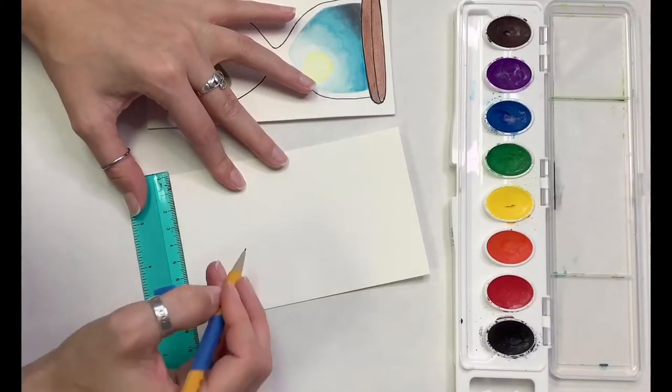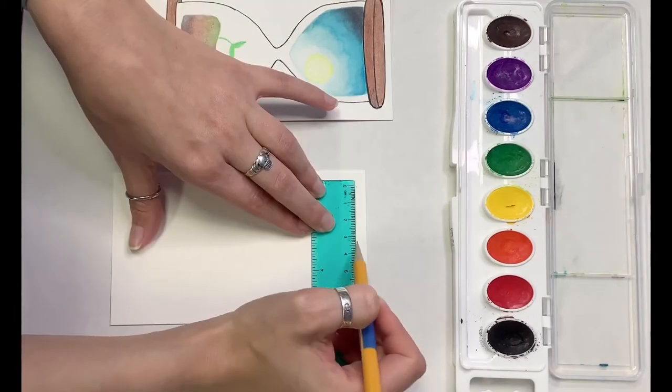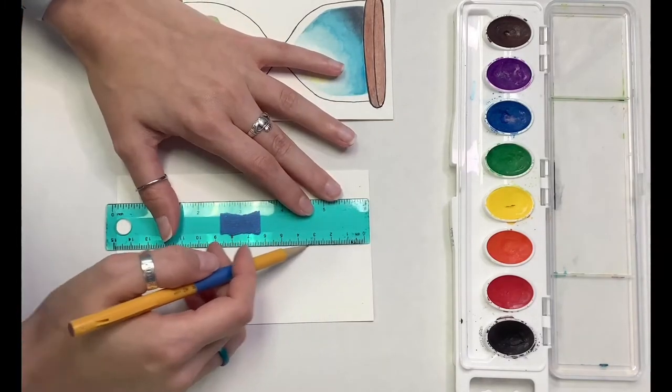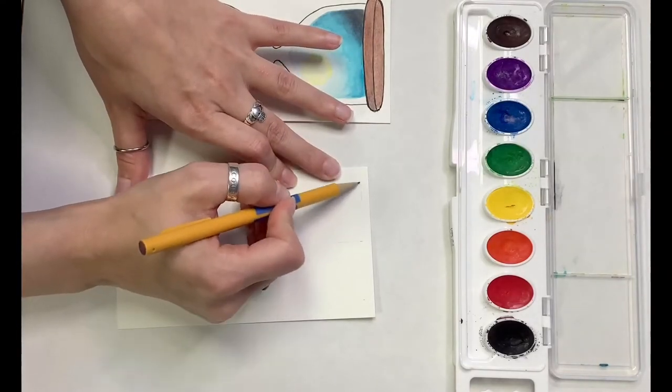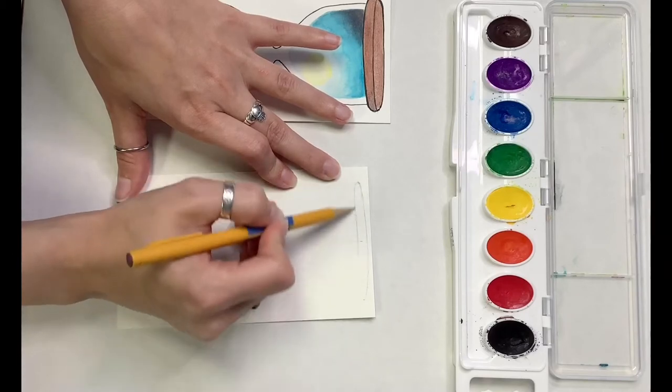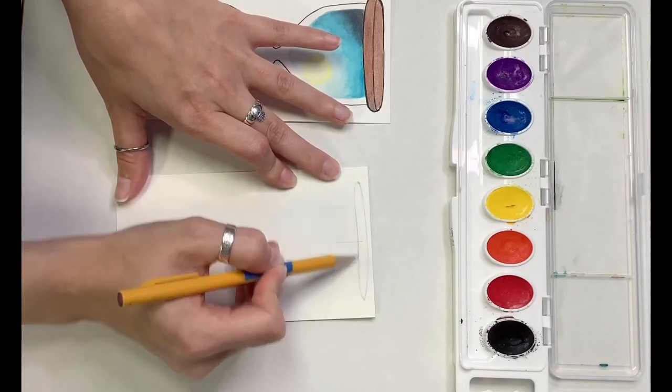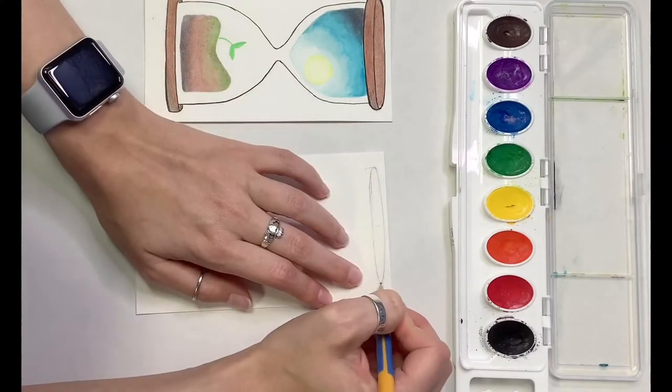First we'll need to draw our hourglass design. This piece of watercolor paper is about three and a half inches wide and six inches tall but adjust this design to any size paper you prefer. I just use this ruler to make sure the top and bottom of my hourglass are even and centered so you can use whatever measurements you like.